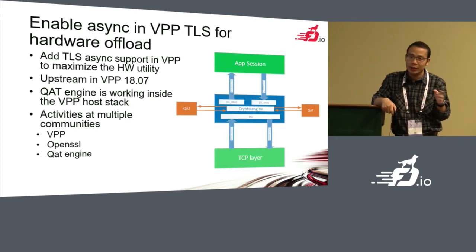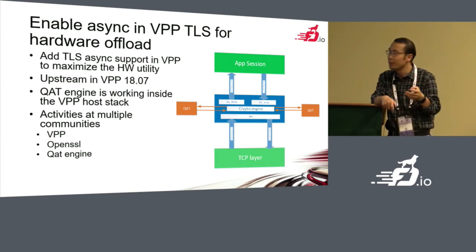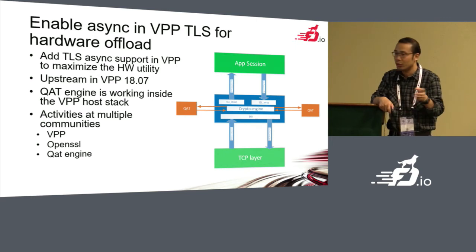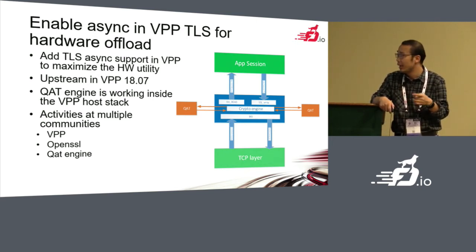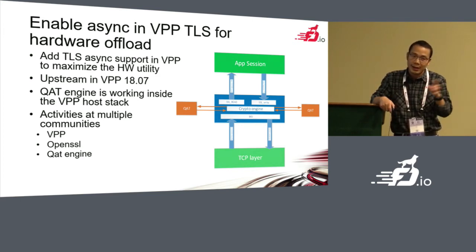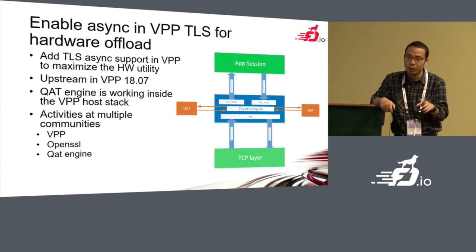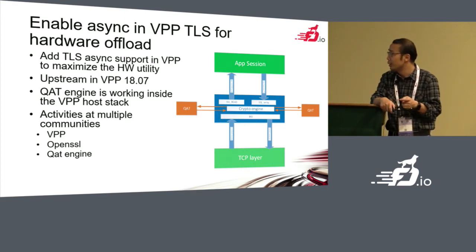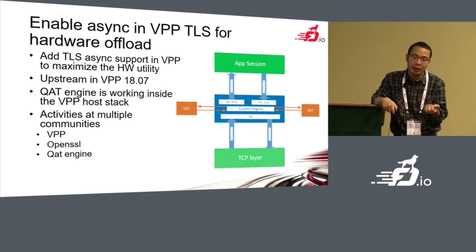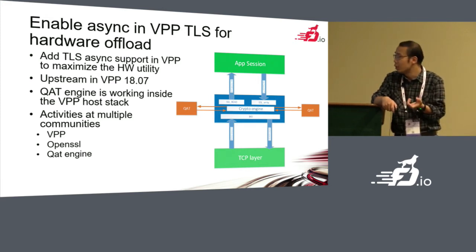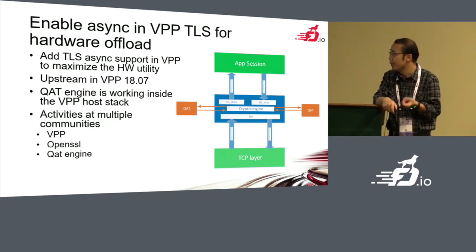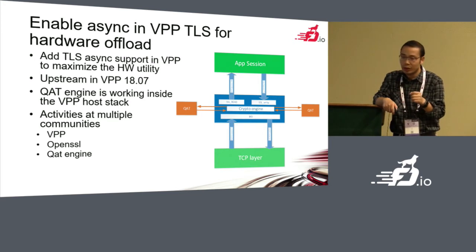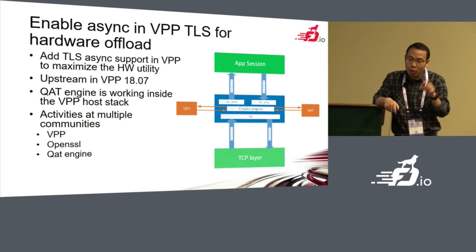For the QAT side, how to accelerate in hardware: we added a hardware offload mechanism so that for crypto operations, we can leverage hardware to help do the crypto. We added a TLS async module — you can see it in the TLS plugin of OpenSSL. This new module named TLS async was added to help with this, and this code has been upstreamed in version 18.07. The async module makes TLS talk with the hardware so the hardware can increase performance.